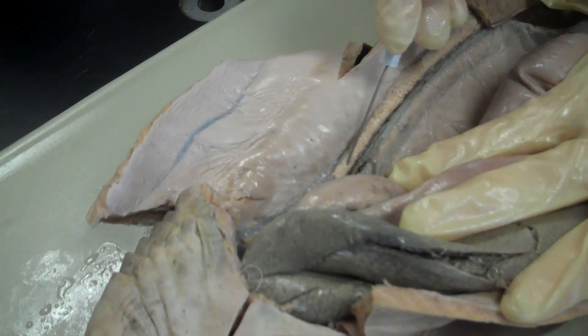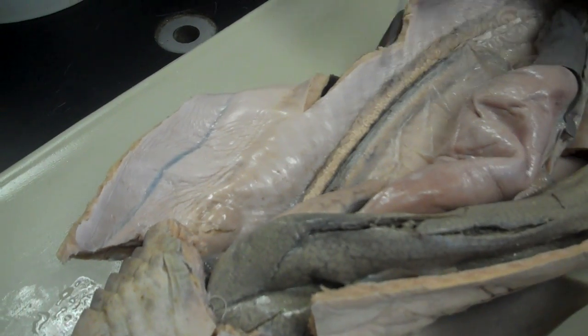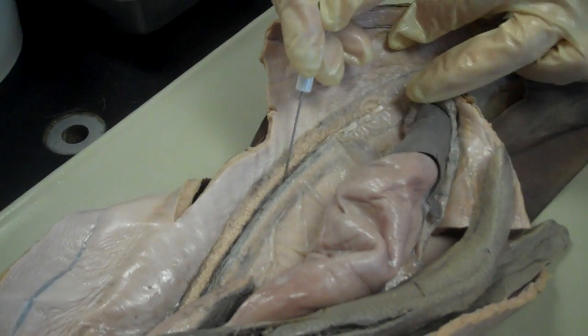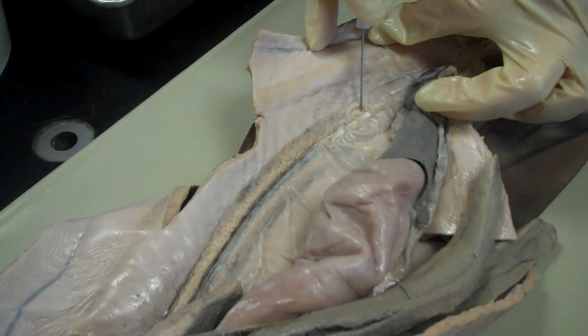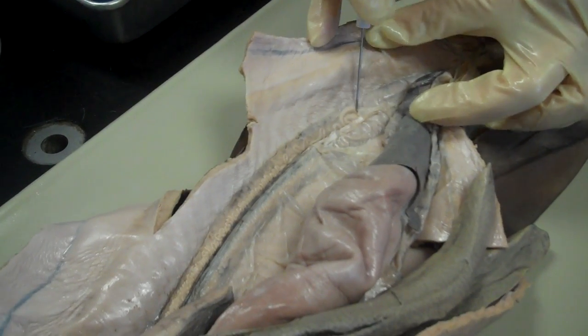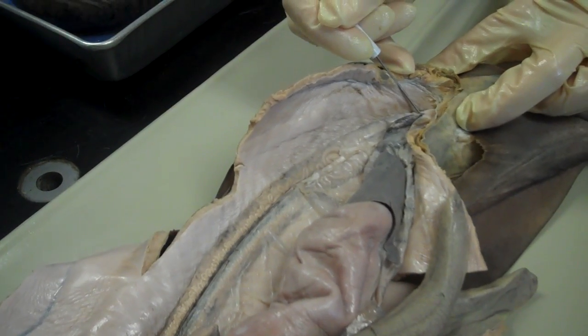Then the sperm travels down these little coiled up tubules. This is the vas deferens. As you get farther posterior in the shark, the tubules end up getting larger in diameter and becoming more straightened. So this would be considered the seminal vesicle here, and that leads down to the sperm sac here.